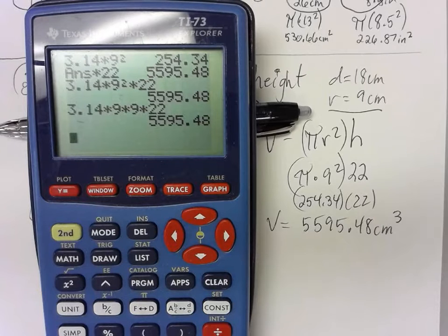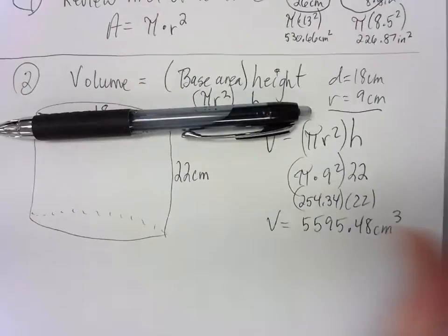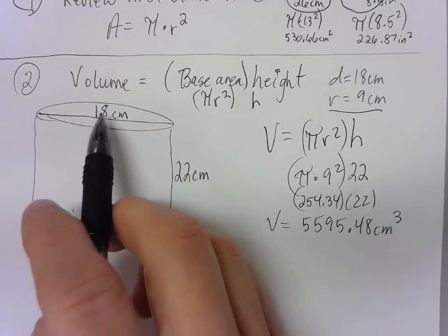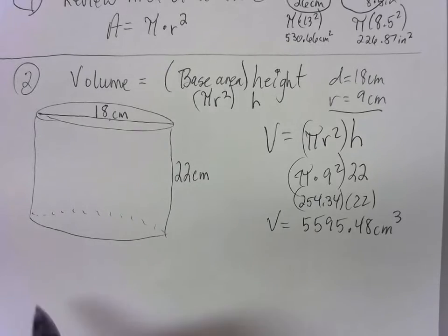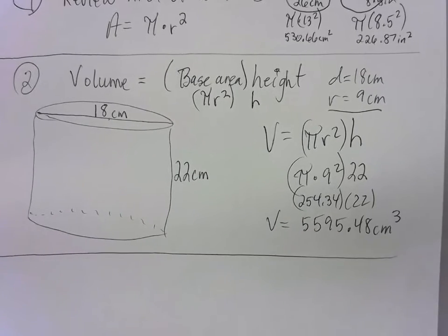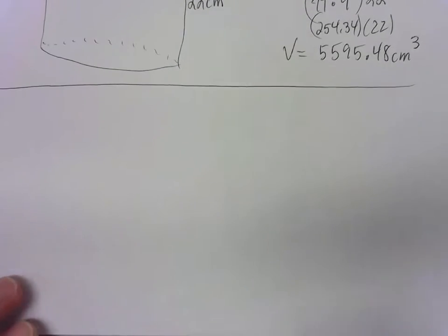Any of those methods are totally fine — it just depends on your calculator. When they give you the diameter, remember to take half to get your radius. Now let's try one where they just give you the radius — that'll actually be a little easier.